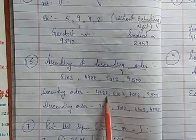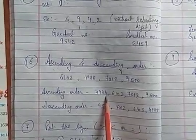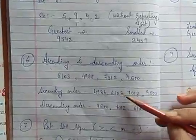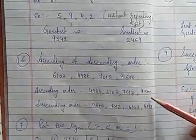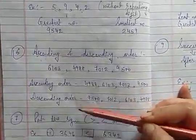So among these numbers, 4988 is the smallest number. Now next one is 6103, then next is 7012 and then next is 9500.